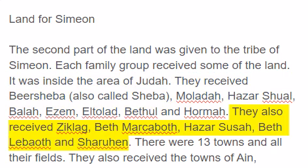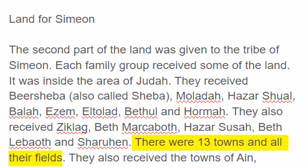They also received Ziklag, Bethmarcoboth, Hazarsusa, Bethlebaoth, and Cheruhen. There were thirteen towns and all their fields.